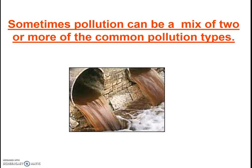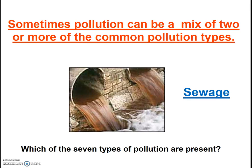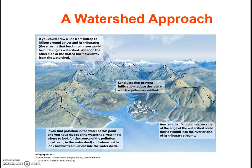Often water is polluted by more than one type of pollution, which adds complexity to deducing effects and figuring out cleanup strategies. Sewage, for example, often contains three, four, or more of the types of pollution we listed. Which of the seven types of pollution are present in sewage? Identifying the types and sources of pollution is the first step in cleaning up a polluted waterway. Water testing can identify the contaminants, but finding the sources is often more difficult. Generally, a watershed approach is used — the watershed is mapped, and investigators look up-gradient to find the source. Water flows downhill both above ground and below ground, so you need only look up-gradient from the pollution to find its source.